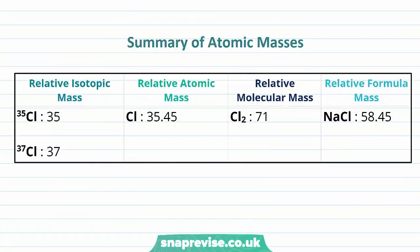To summarise everything we've talked through today, this table shows the different types of atomic masses. Relative isotopic mass applies to isotopes — for example, chlorine-35 and chlorine-37 have relative isotopic masses of 35 and 37 respectively. Relative atomic mass takes into consideration that elements can exist as different isotopes. Relative molecular mass accounts for elements existing as molecules or compounds, and relative formula mass applies to ionic compounds.